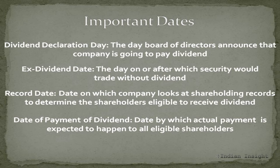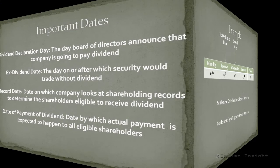The next important date associated with dividends is the date of actual payment of the dividend. This is essentially the date by which the company intends to pay out the dividend to those shareholders who are eligible to receive it. The company declares this date, and it may be a week or more after the record date, so that the company has sufficient time to accurately pay the dividend to all those entitled.